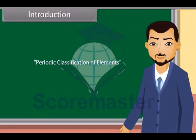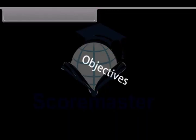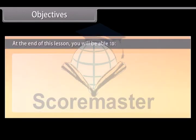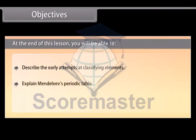Children, in this lesson we will learn about the basis on which elements are classified. Objectives: At the end of this lesson you will be able to describe the early attempts at classifying elements, explain Mendeleev's periodic table, and explain the modern periodic table.